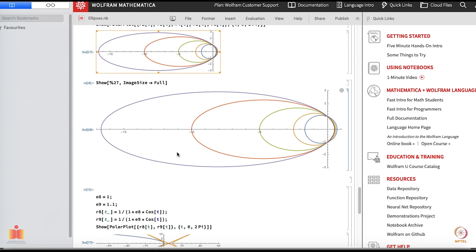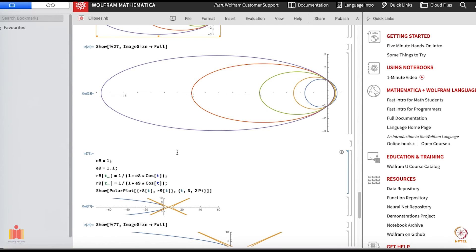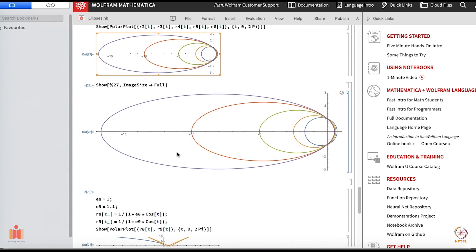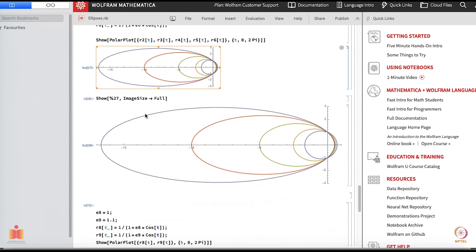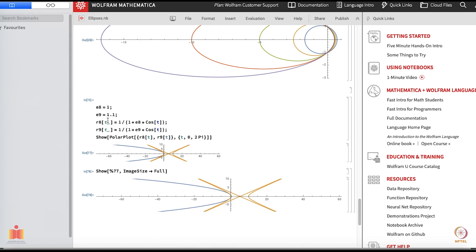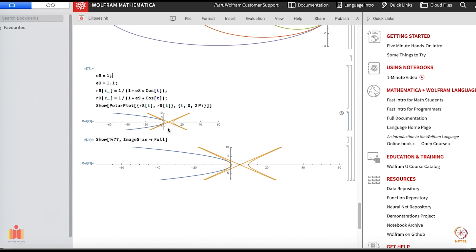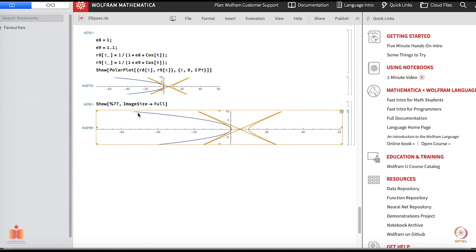Let us see what happens if I put epsilon to 1 - you get a parabola - and also epsilon greater than 1 you will get a hyperbola and that is what I have done here. I have defined another r8 and r9. You have e8, e9 which I have taken to be 1 and 1.1 and you see this is what you get. This blue thing is the parabola here and then you have the hyperbola, the two parts of the hyperbola here you can see.